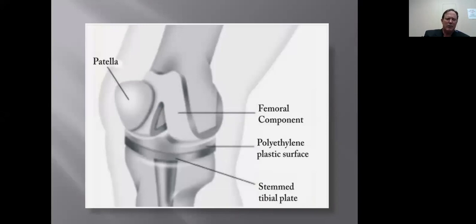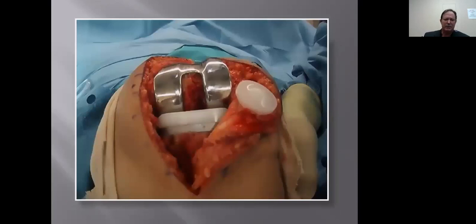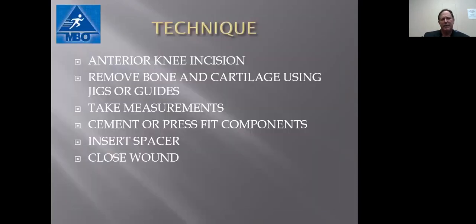What you're doing in a knee replacement is resurfacing: you take some bone and cartilage away from the bottom of the femur and put a metal liner on it. The same thing is done with the tibia, with a piece of plastic in between, and you may resurface the kneecap as well. All knee replacements involve making an incision in the front of the knee, removing bone and cartilage, taking measurements, putting in an implant — either cemented or press-fit — adding a plastic spacer, and closing the wound. All the marketing aside, that's what every knee replacement involves.